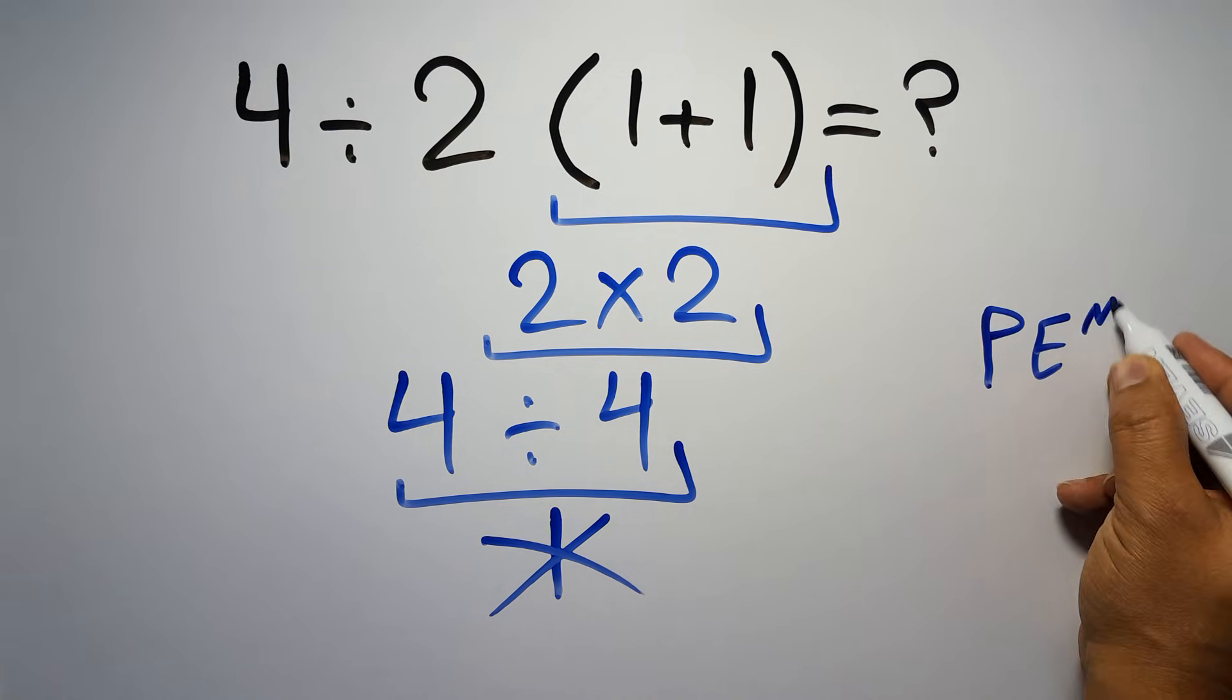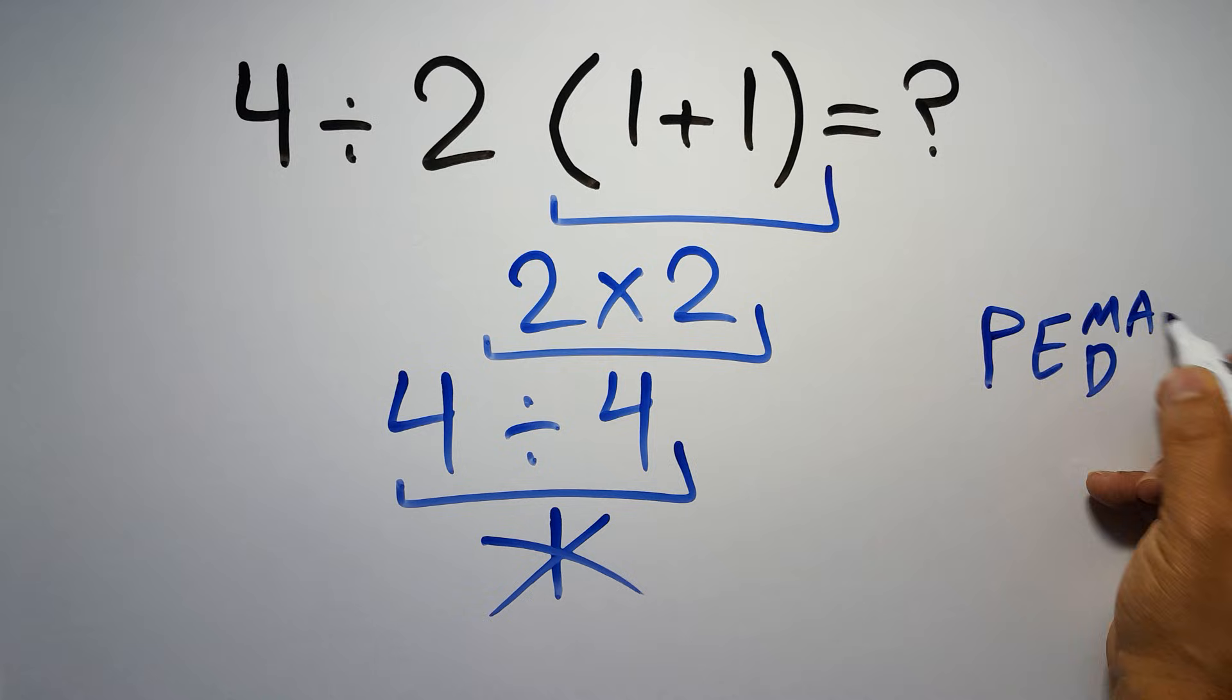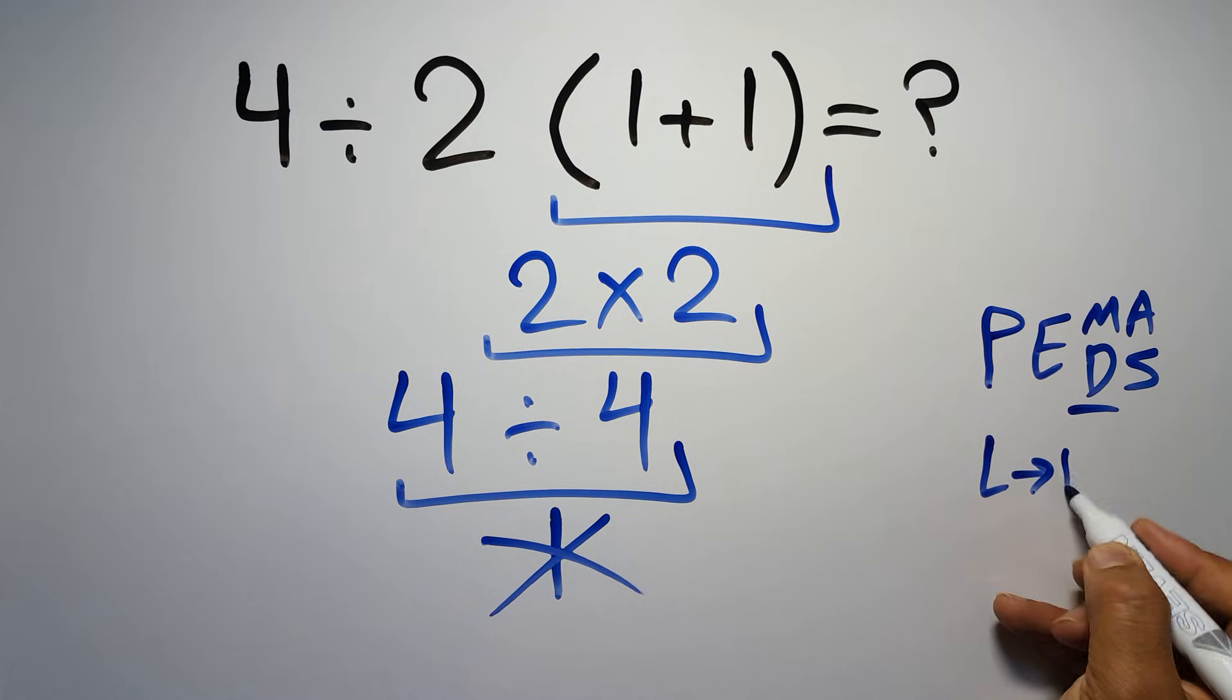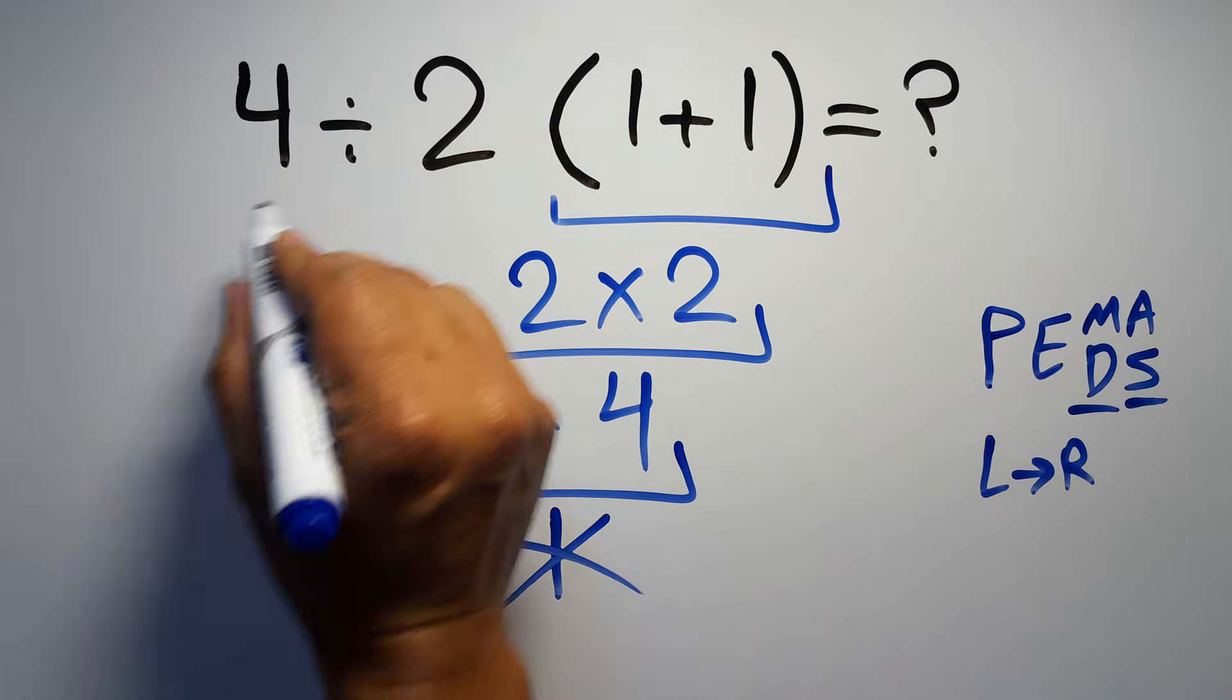exponents, then multiplication or division, and finally addition or subtraction. Remember that multiplication and division have equal priority and we have to work from left to right. The same applies to addition and subtraction. In this expression, we